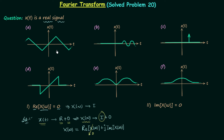In the question it is given that x(t) is a real signal, but this is of no use because all six signals are real. So we focus on the condition that x(t) is odd. Looking at the waveforms: signal A is odd, signal B is not odd, signal C is not odd, signal D is odd, E is even, and F is even. So the answer for part 1 is signal A and signal D.